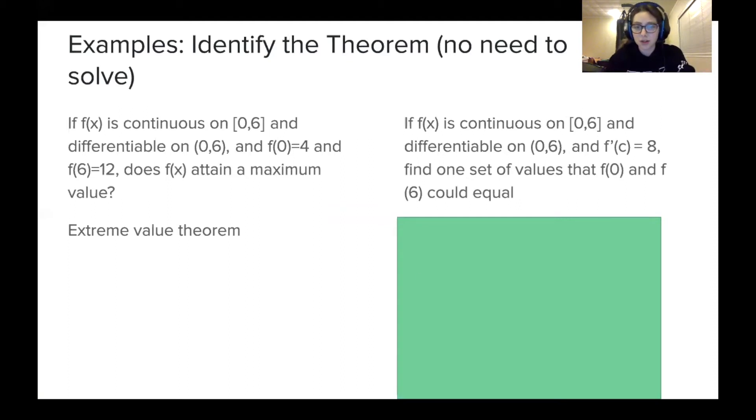And last problem here, same frame, but a little bit different, actually. f(x) is continuous on the closed interval from 0 to 6 and differentiable on the open interval from 0 to 6 and f'(c) equals 8. Find one set of values that f(0) and f(6) could equal. Again, you don't have to solve it, but hypothetically, if you did, you'd be using the mean value theorem. So if you did want to go about solving this, you would set up the mean value theorem equation. And then for f'(c), you'd plug in 8, and then you'd have on the bottom, you'd have 6 minus 0, and then on top you'd have f(b) - f(a). So you'd cross multiply that out and solve it. Just normally you're solving for f'(c), so I wanted to give you a problem that was a bit different.